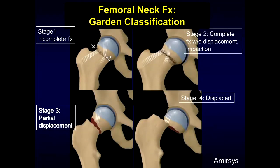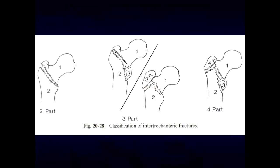There is a classification for femoral neck fractures: stage 1 is an incomplete fracture; stage 2 is a complete fracture without displacement and impaction; stage 3 is partial displacement but part still remains; and stage 4 is a displaced fracture. For intertrochanteric fractures, the classification system includes 2-part, 3-part, and 4-part types.